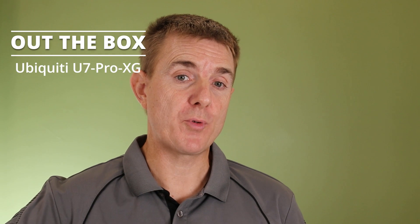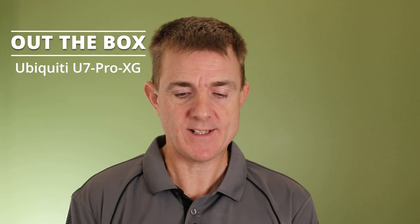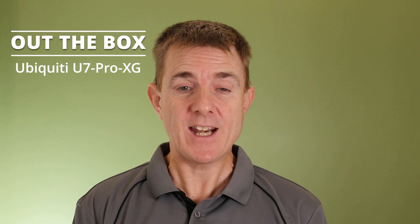This is the Ubiquiti U7 Pro XG. It's a wireless 7 access point. It's available in black and white. We're just going to be looking at the white model today but the specifications are exactly the same across both of them.